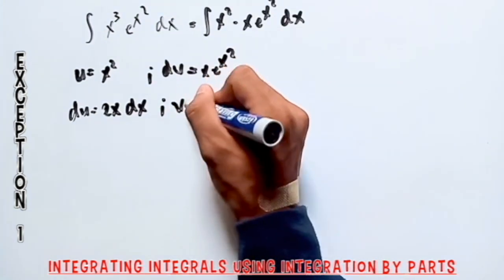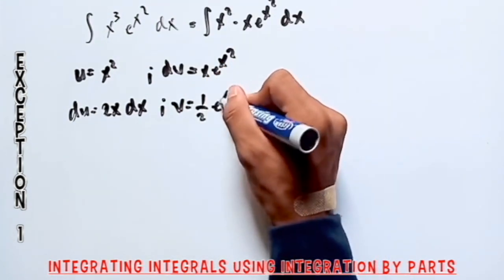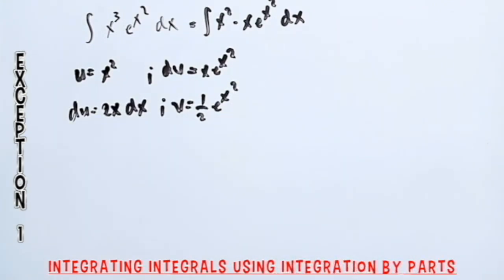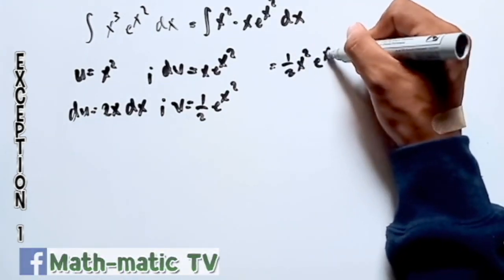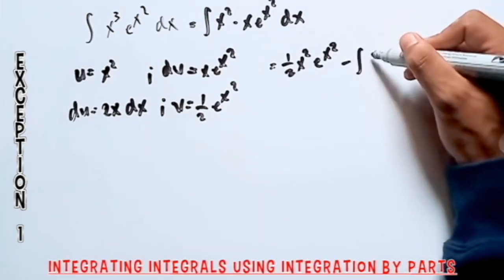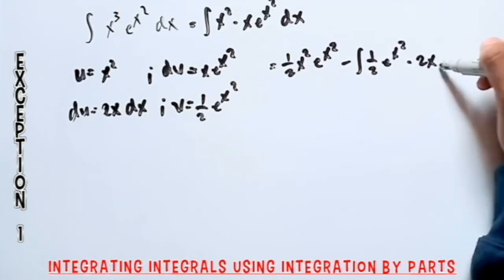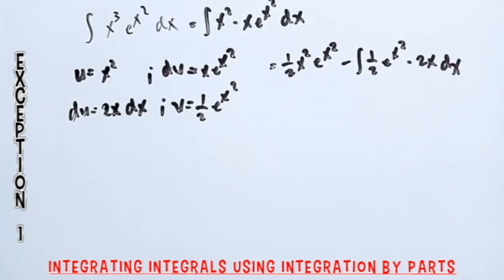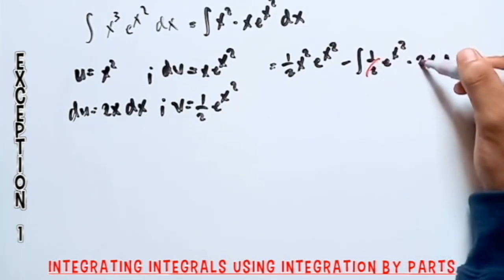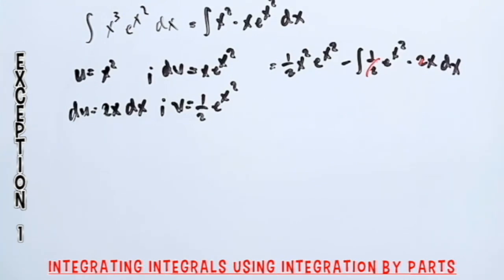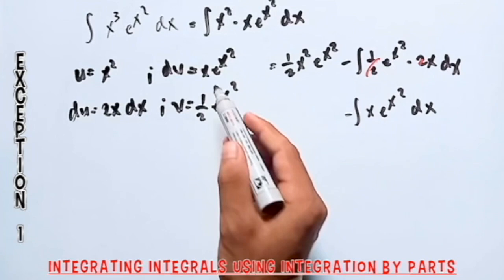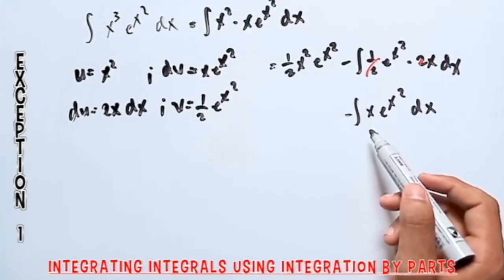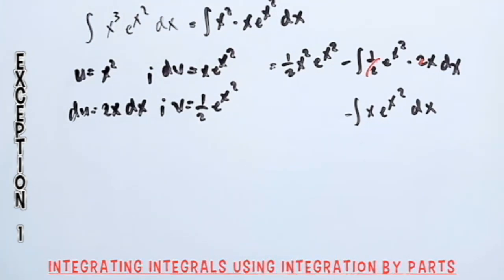And du, differentiating x squared, is equal to 2x dx. The integral of x e raised to x squared is one-half e raised to x squared — I will show later how to get this. Following the integration by parts formula, this equals uv, which is one-half x squared times e raised to x squared, minus the integral of v du, which is one-half e raised to x squared times 2x dx. Notice that the one-half and 2 cancel, giving negative integral of x e raised to x squared dx. This is the same integrand as before, so the answer is also one-half e raised to x squared.